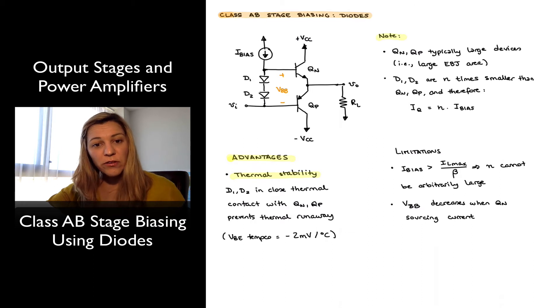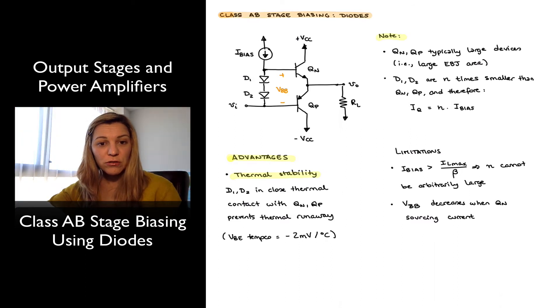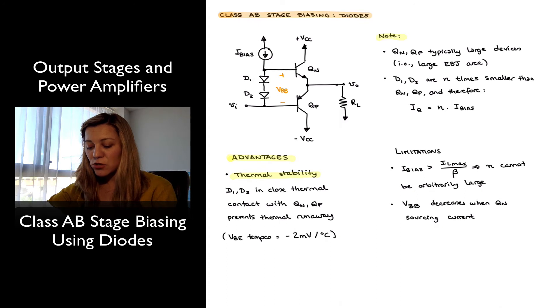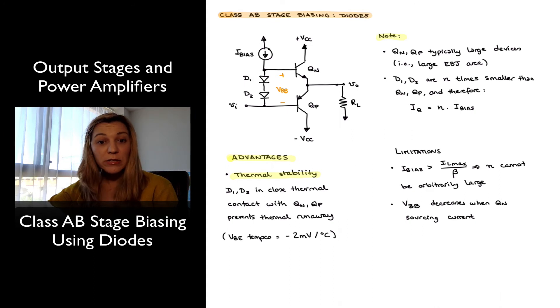Diodes D1 and D2, if they are placed in close thermal contact to the output transistors Qn and Qp, can prevent this thermal runaway problem. The reason for that is because they have a negative temperature coefficient. The voltage across a diode, or the VBE of a diode-connected transistor, they all have negative temperature coefficients of about minus 2 millivolts per degree C.